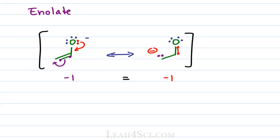To show the resonance hybrid of this structure, we start with the skeleton, show any electrons that are not moving, and then show dotted lines where the electrons are moving back and forth. Since oxygen carries a negative charge for part of the time, we give it a partial negative; since carbon carries a negative charge for part of the time, we give that a partial negative — and that's our resonance hybrid.